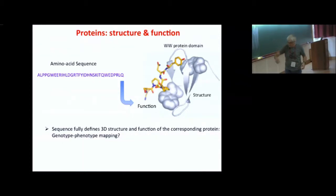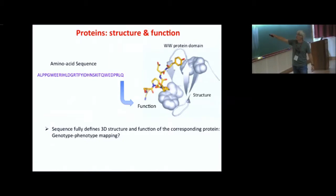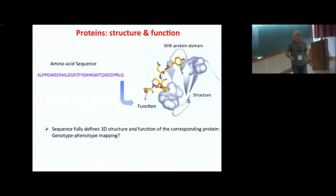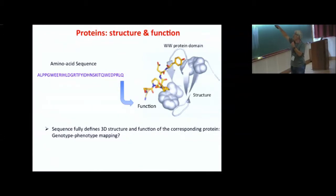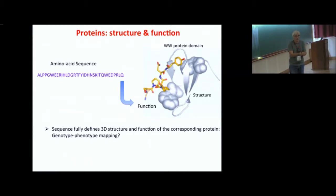You have hundreds of WW domains with different sequences, hundreds of ligands, and a table of binding with 0s and 1s — and they have to be specific. Otherwise, the domain would wrongly recognize something else, which would be a disaster for all protein-protein interactions. One of the questions people have been asking for a long time is: if I look at a sequence — a set of amino acids — how do I understand and predict the structure? That's called the protein-folding problem, which has been open for decades. And another question is: can I understand the function — to what peptide will this domain bind, and with what affinity?